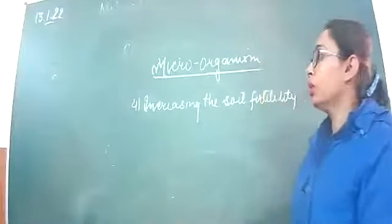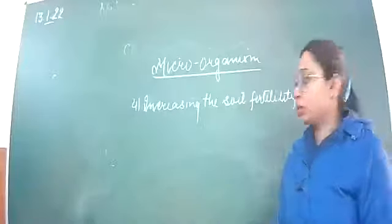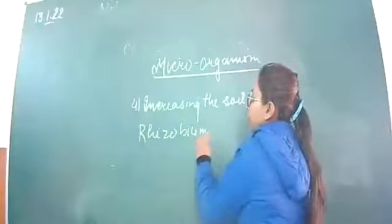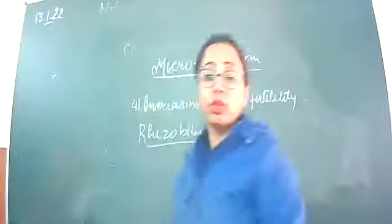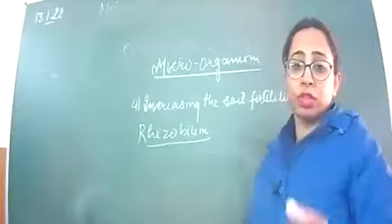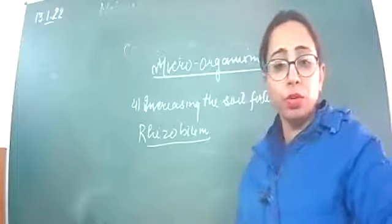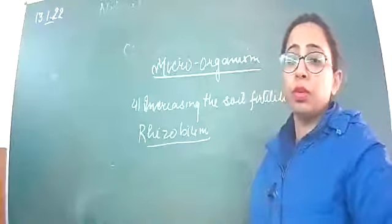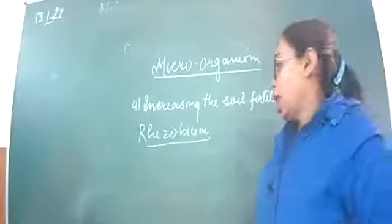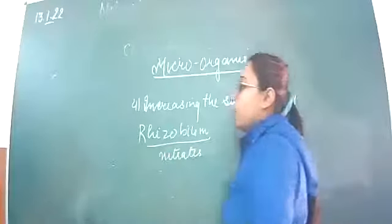Increasing the soil fertility — you have studied about the bacteria Rhizobium in junior standard also. This bacteria is present in the roots of leguminous plants. It helps in nitrogen fixation: it traps nitrogen from the atmosphere and converts it into usable nitrogenous compounds. First it converts nitrogen into nitrites, and then into nitrates, which are readily available to the plants.